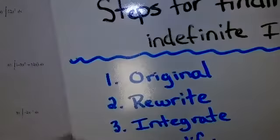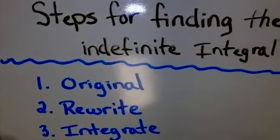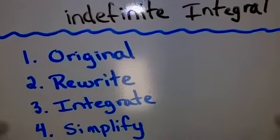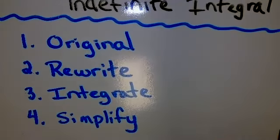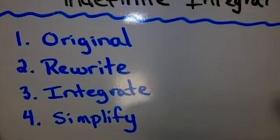So before we get into the examples, we're going to start off with the steps for finding the indefinite integral. Of course, they're going to give you an original problem. After they give you the original, you're going to want to see if you can rewrite the original to just make things easier on you. After that, you want to integrate using one of your rules or properties, and then simplify if you can. So pretty basic rules: take the original, rewrite it, integrate, and then simplify if it simplifies.